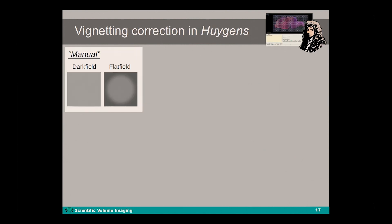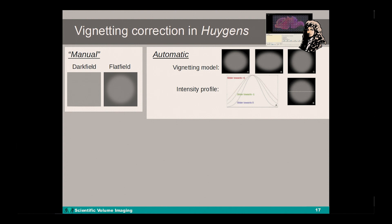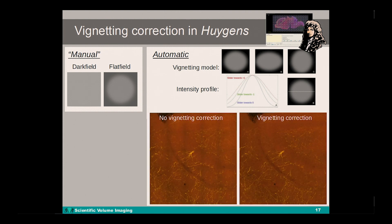The vignetting correction option in the Huygens stitching and deconvolution wizard offers two approaches. One is the manual approach where a dark field and flat field image need to be recorded and loaded. The automatic setting allows the user to select the vignetting model and the profile of intensity. Each channel can be selected or deselected for vignetting correction. Here is a two-channel dataset which clearly shows vignetting artifacts after stitching, whereas the stitched version automatically corrected for vignetting in Huygens does not, which is shown on the right side.